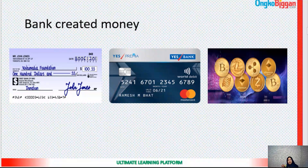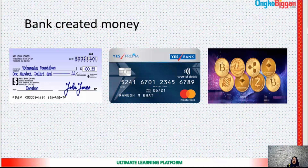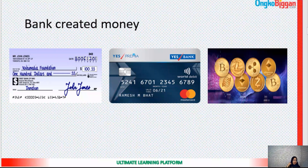Commercial banks can create money by creating deposits or sanctioning loans, but no one can be forced to accept it. Examples of bank created money include checks, debit cards, cryptocurrency, and virtual currency. Transactions can be made through checks against bank deposits or overdrafts. Bank deposits can be held in current accounts or savings accounts, and payments can be made via check, debit card, credit card, or other bank-introduced mediums of exchange.